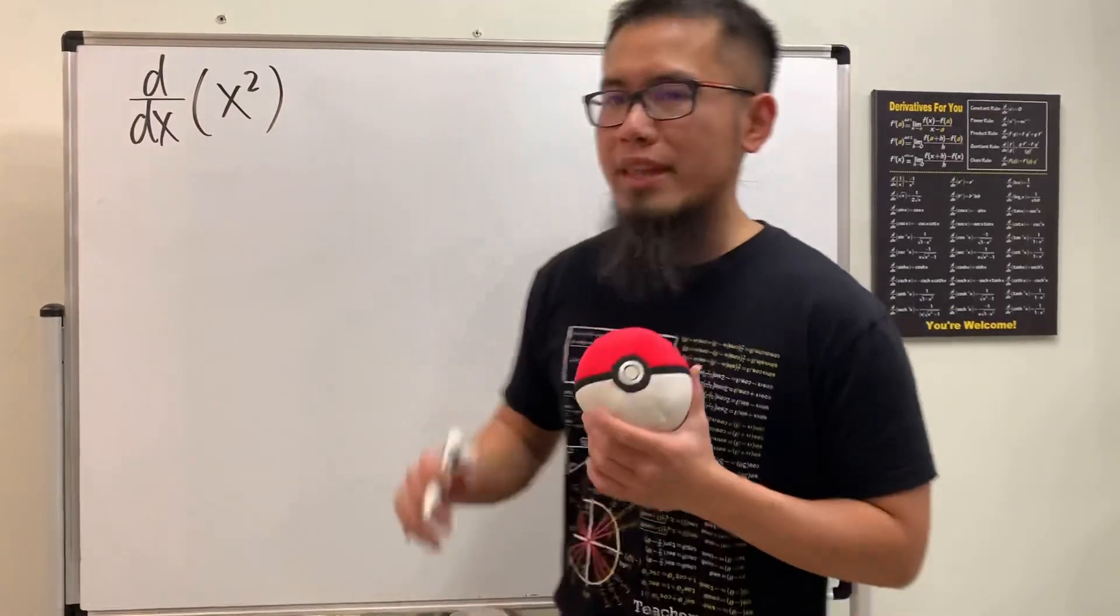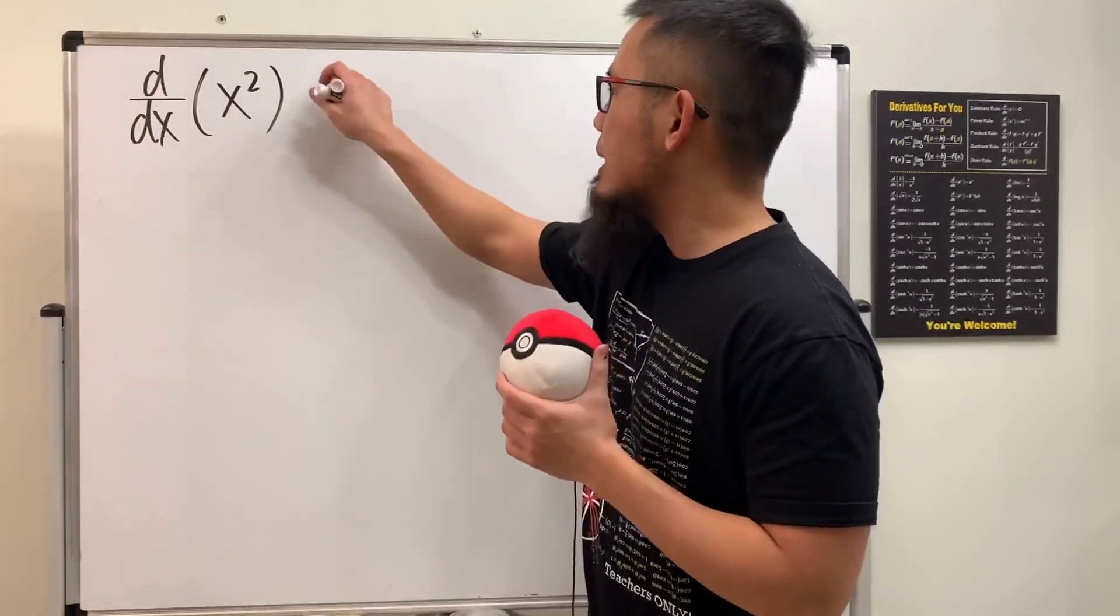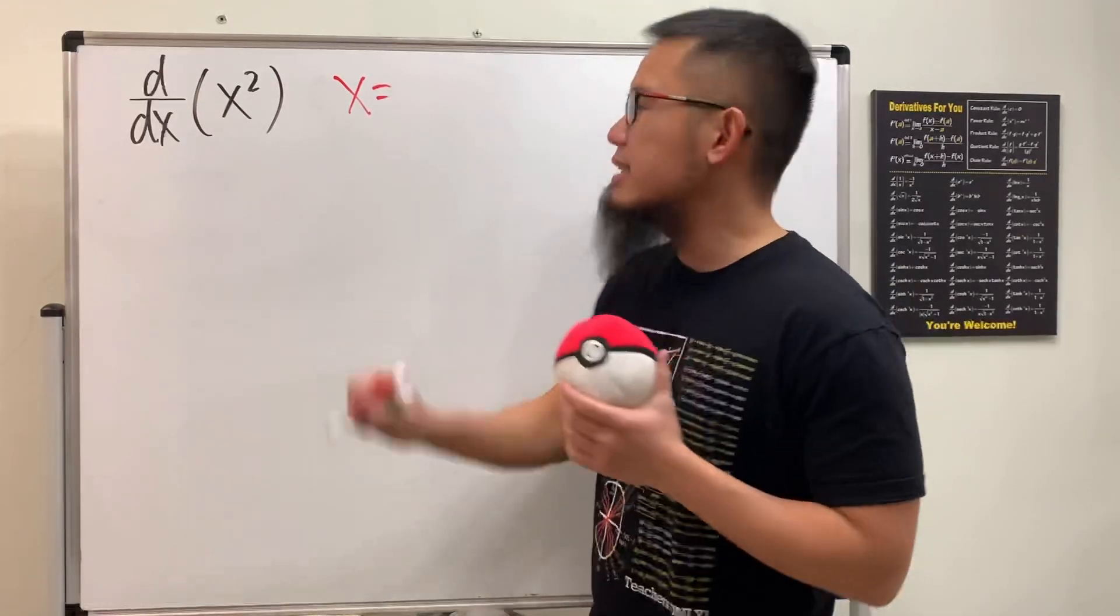Okay, I will show you guys how to differentiate x squared, but we are not going to be using the power rule. So check this out. First, I'm going to do a substitution: x is equal to sine theta.